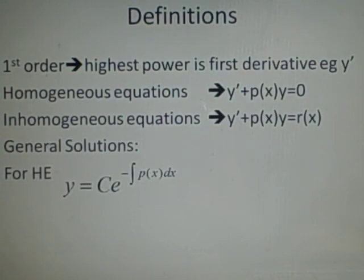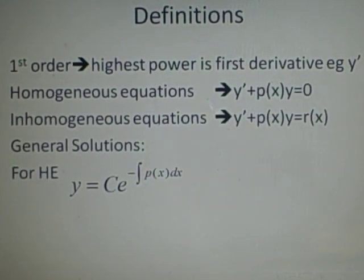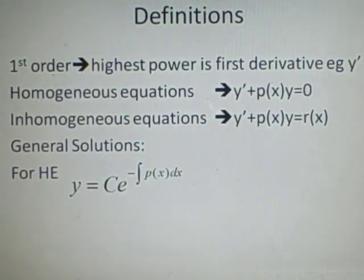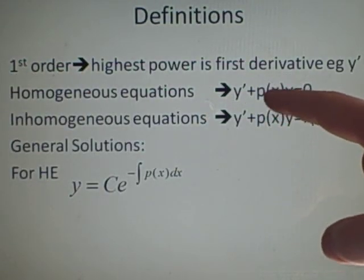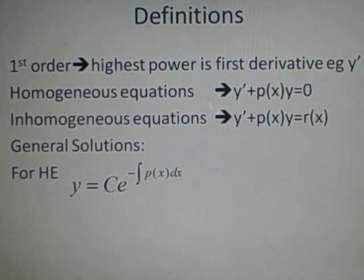Right, first-order, this is when the highest power is the first derivative, so y prime. A homogeneous equation, this is an example such as y prime plus some function of x times y, that equals 0.